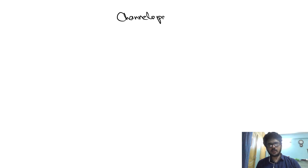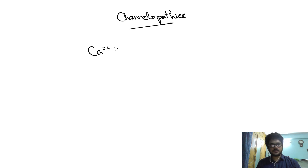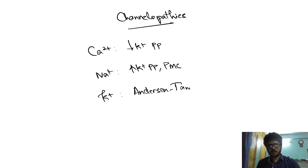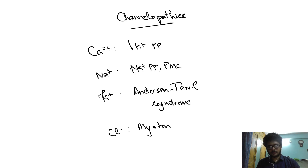For those who hadn't seen the previous video, let's recap the important channelopathies. Those affecting the calcium channel: hypokalemic periodic paralysis. Those involving the sodium channel: hyperkalemic periodic paralysis and paramyotonia congenita. Those involving the potassium channel: Anderson-Tawil syndrome. And those involving the chloride channel: myotonia congenita.